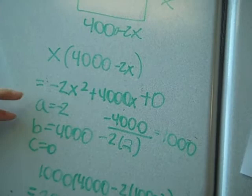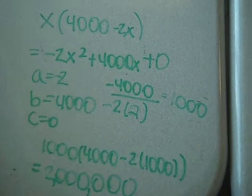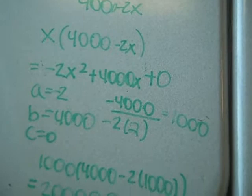We found a, b, and c. Then to find the vertex, which would show us the maximum area, we did opposite of b over 2a to get the x value, which was 1,000.